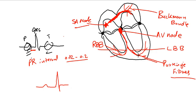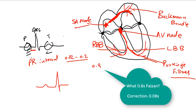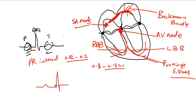Now, QRS represents ventricular depolarization. Purkinje fibers, as I said, are the fastest in the conduction system and depolarize both ventricles almost instantly — in just 0.08 to 0.12 seconds. That's why the QRS complex is narrow and sharp. Also, since the ventricles have a large muscle mass, the amplitude of the QRS is also large.